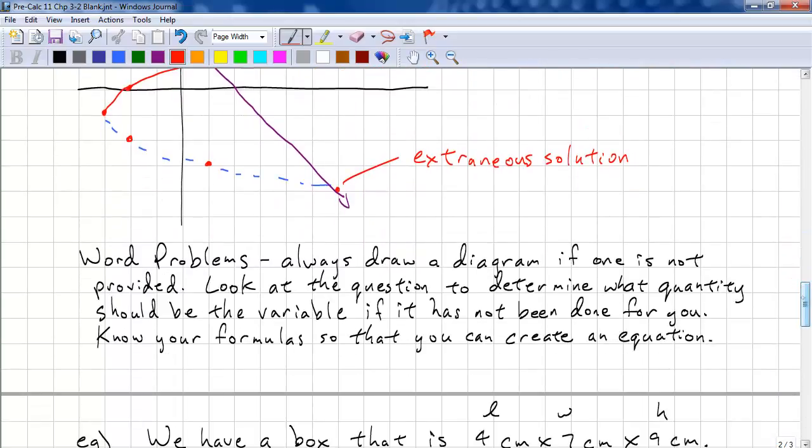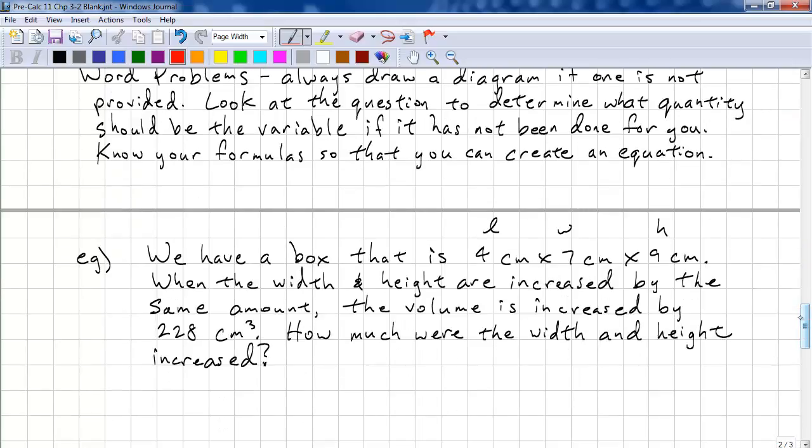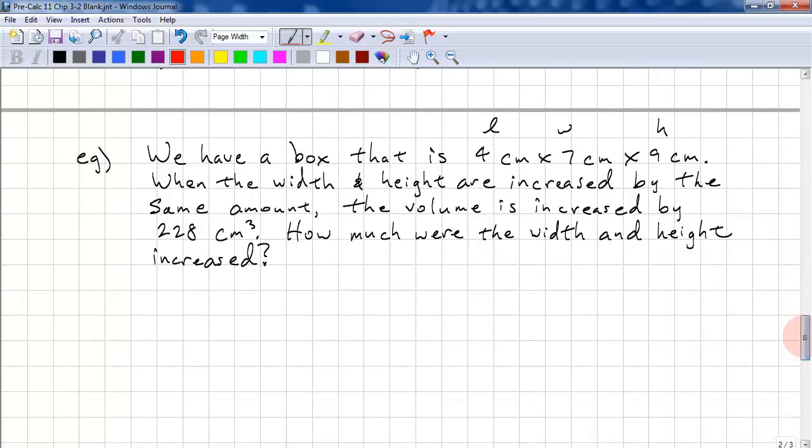So, word problems. If you have a word problem, always draw a diagram if it's not provided. And look at the question to determine what quantity should be the variable, if it hasn't already been done for you. Know your formula so that you can create an equation. Let's look at an example. We have a box that is 4 cm by 7 cm by 9 cm. It's been labeled L, W, and H.